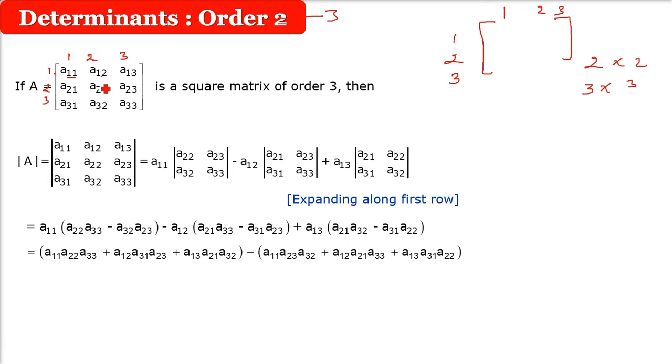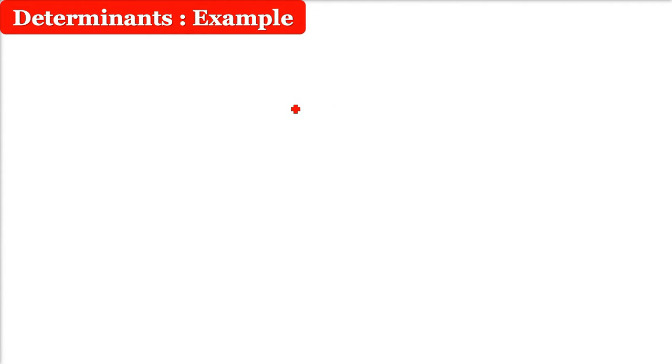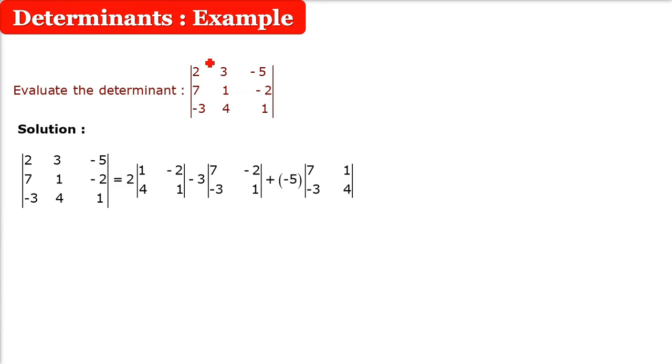Or to be very informal, whenever we expand it using any row or any column, the middle one has to be negative. Middle one has to be negative. Okay, you will understand by this. I am opening it using the first row. You can use any row or any column in this matrix to open it.